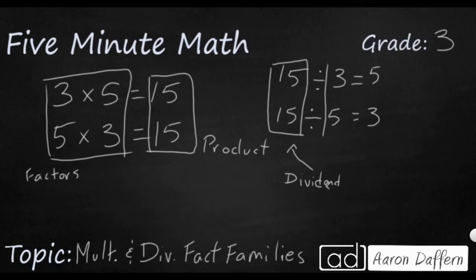The number that you are actually dividing into the dividend is called the divisor. And all of these have different names. And your answer is always going to be the quotient. So the quotient is the answer to a division problem, whereas a product is the answer to a multiplication problem.